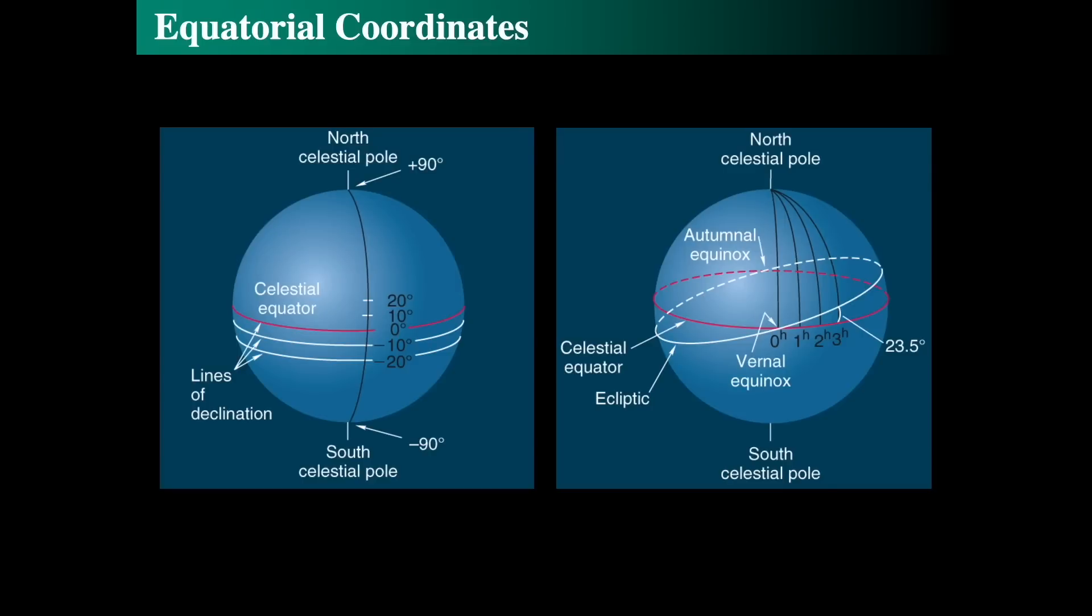We can also look at the right ascension, which is the number of hours of angle from the vernal equinox. The vernal equinox is where the ecliptic meets the celestial equator. The ecliptic is the path that the Sun takes, and the vernal equinox is one of two nodes where these two circles intersect. We're calling right ascension in hours, not degrees. There are 24 hours around the North Celestial Pole, and each of these hours is 15 degrees.